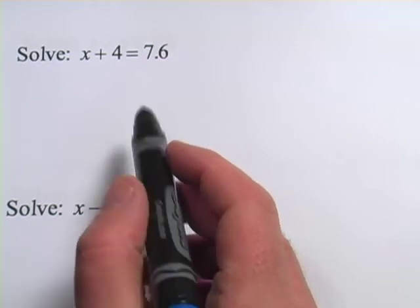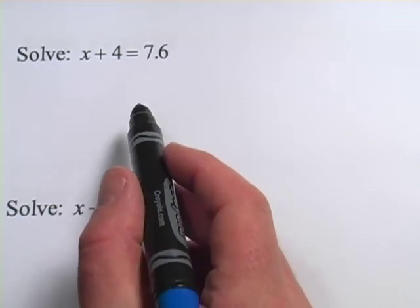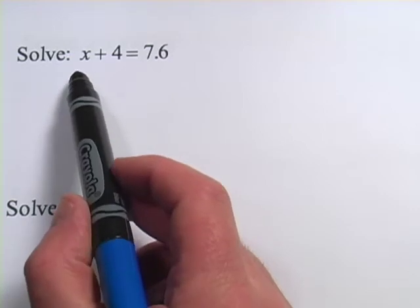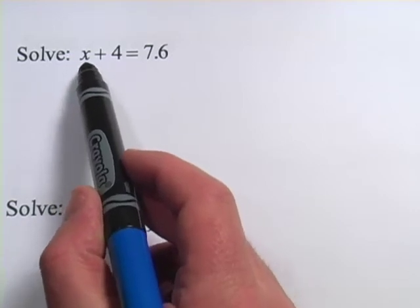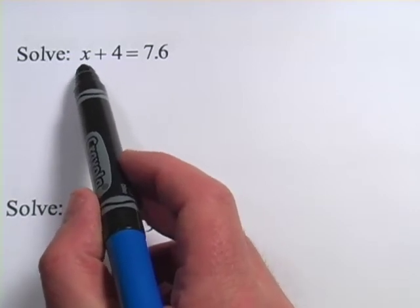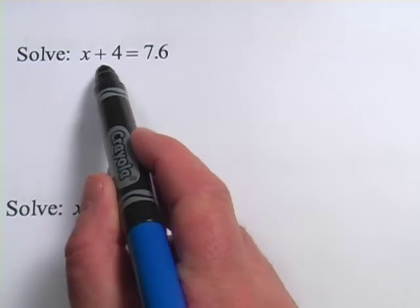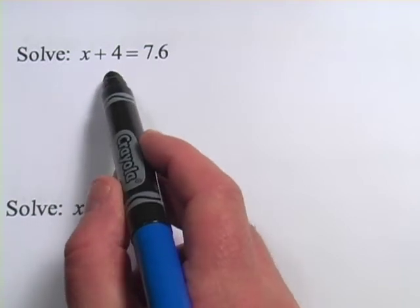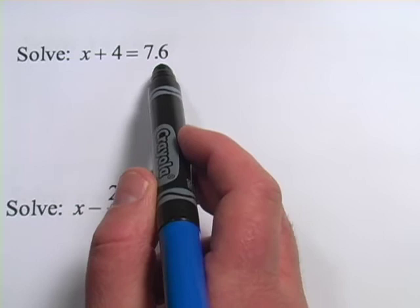In these problems, we're starting to do some real, live algebra. And what we have in these problems is we have a variable, x. That's our unknown. That's the thing we want to solve for. And then it's got some number added or subtracted to it, an equal sign, and then some number over here.